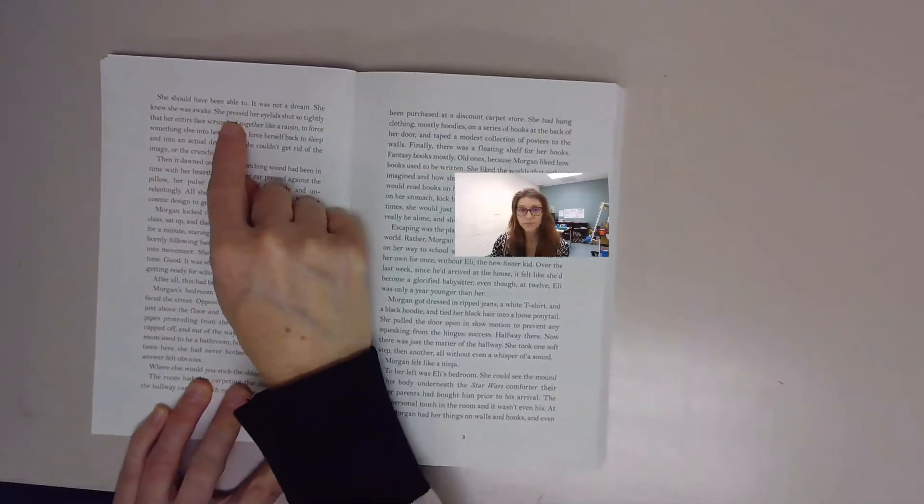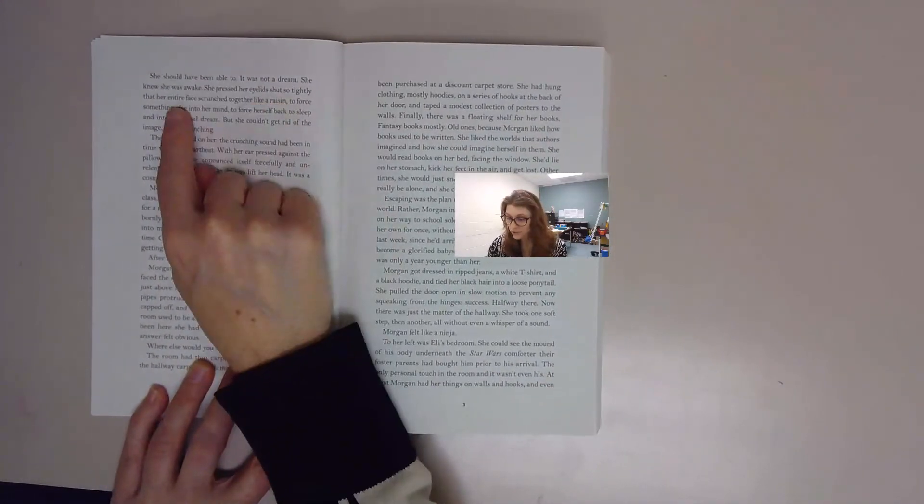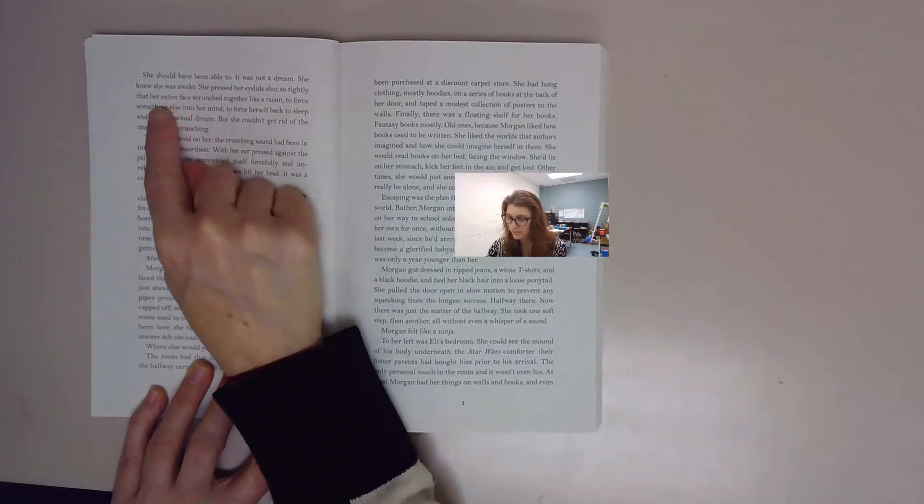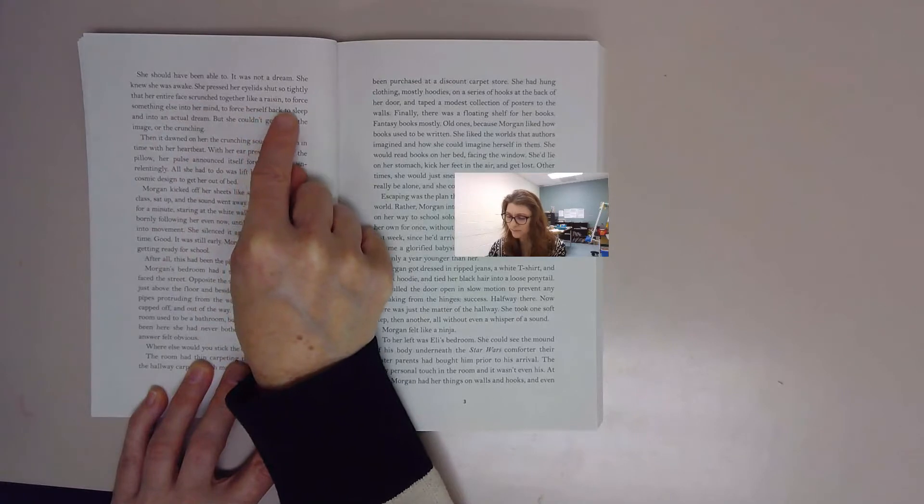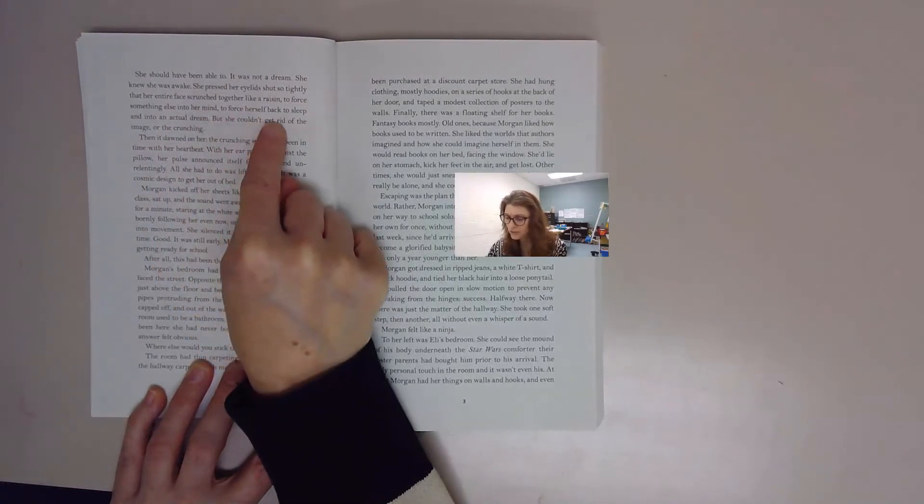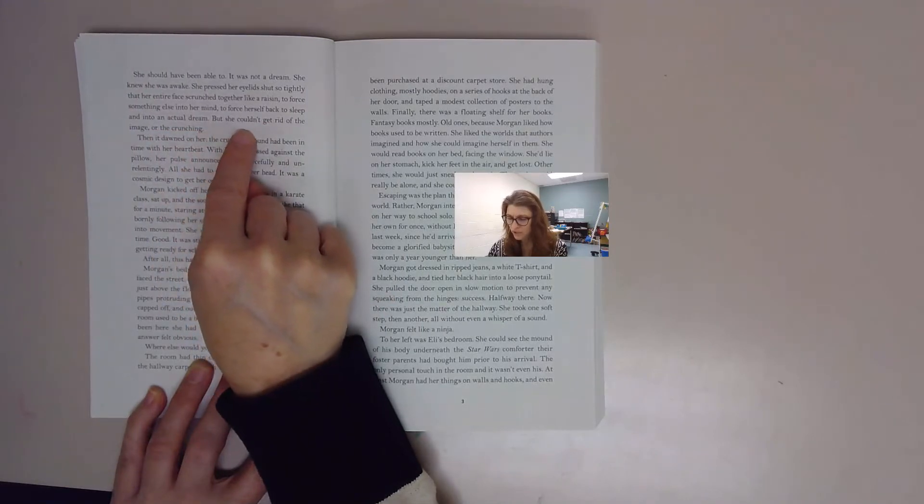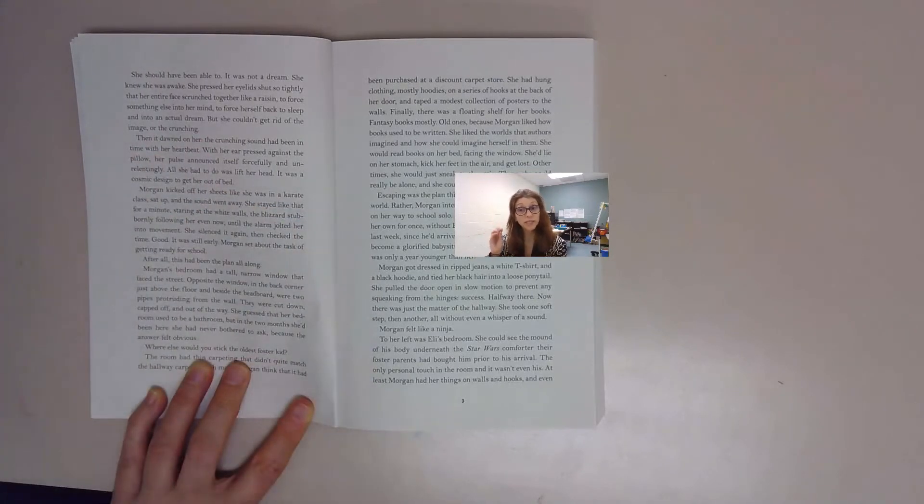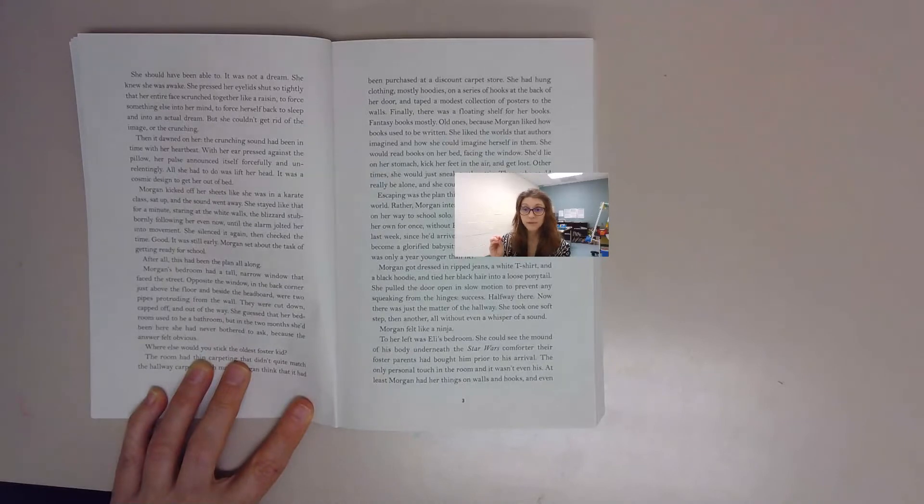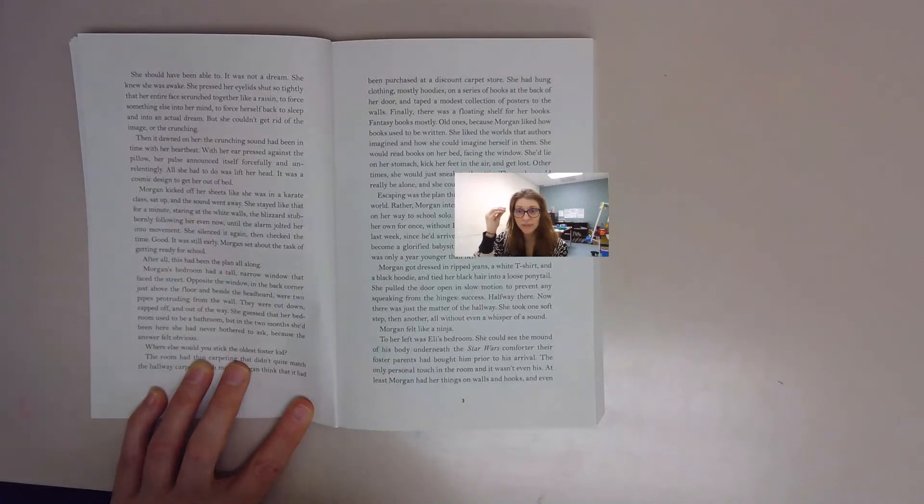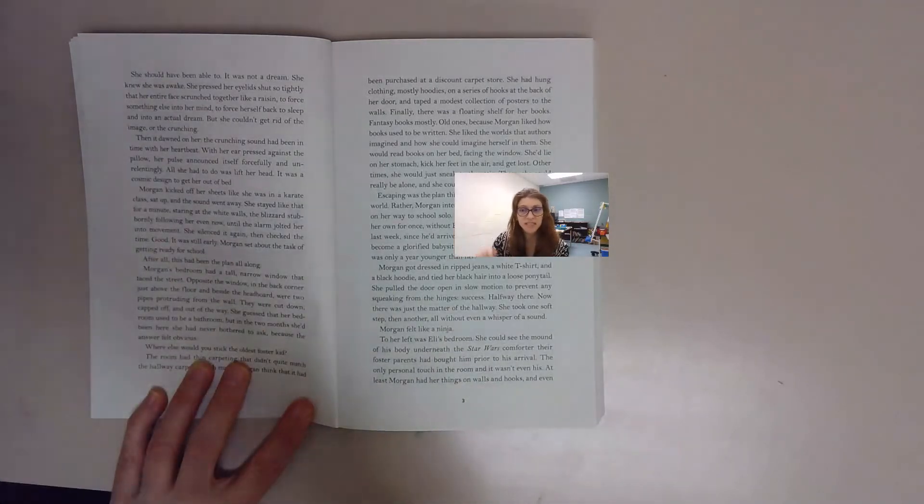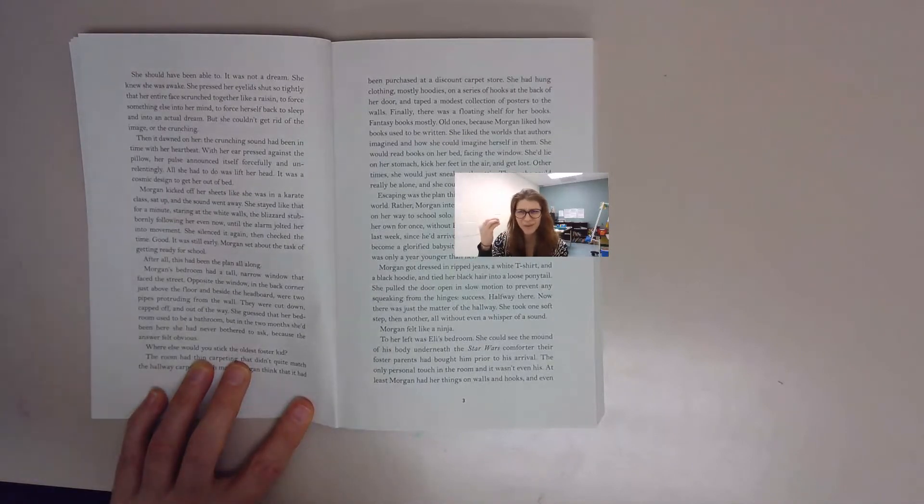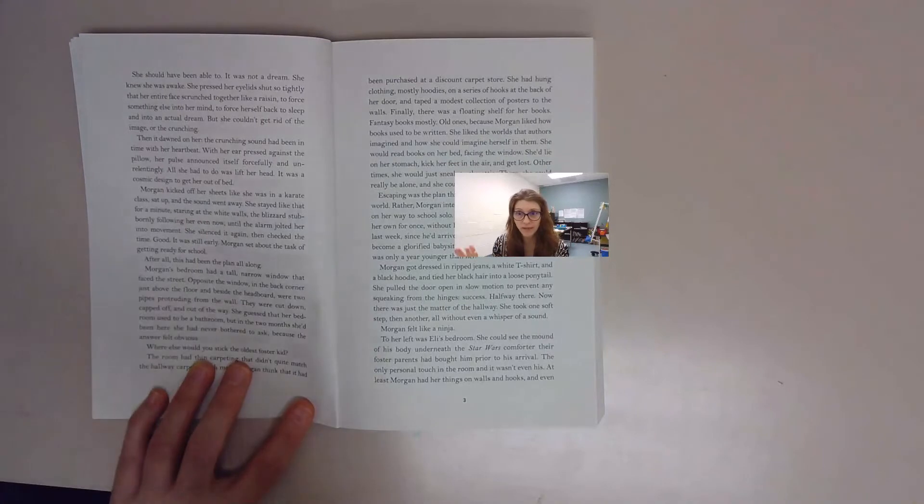Morgan tried to imagine something else. She should have been able to. It was not a dream. She knew she was awake. She pressed her eyelids shut so tightly that her entire face scrunched together like a raisin to force something else into her mind, to force herself back to sleep and into an actual dream. But she couldn't get rid of the image or the crunching. Morgan is awake, she hasn't fallen back asleep, but yet this is still happening in her mind and she can't get rid of it. She feels like she's in the middle of a blizzard, there's a light in the distance and she can't get to it. Now she's trying to wake herself up or just fall back asleep and have an actual dream.